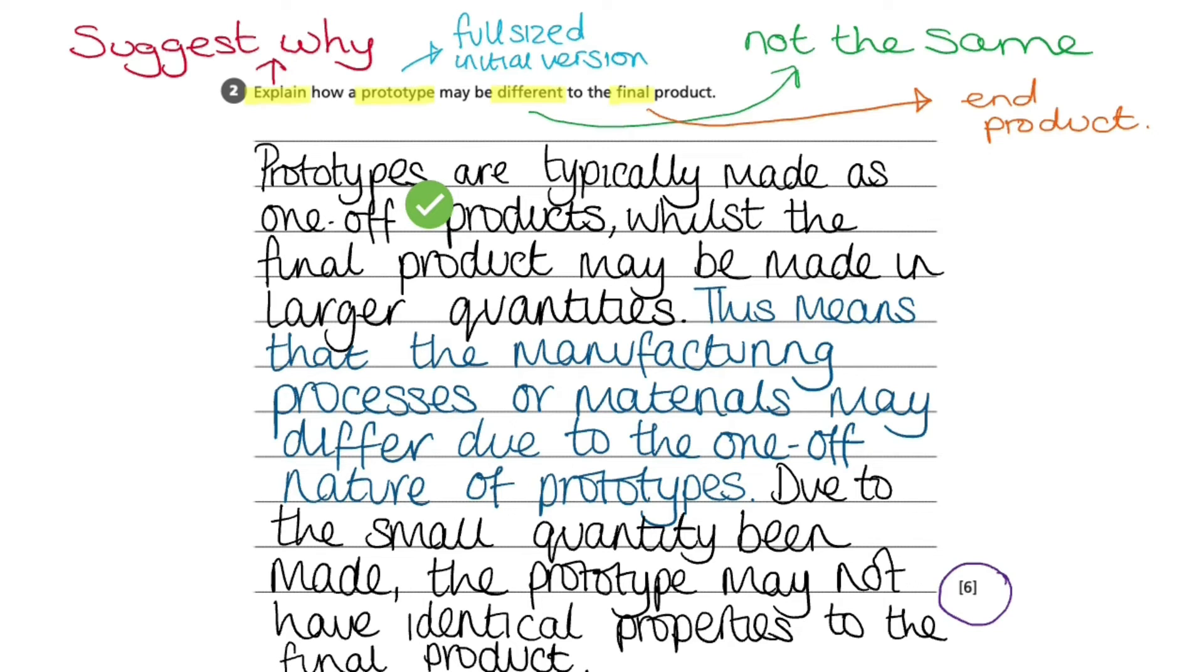So now that we have our answer, it's best to read through it. And as we read through it, we can tick or make a small mark or just a note in our head how many marks that we have. So prototypes are typically made as one-off products, that would be one mark.